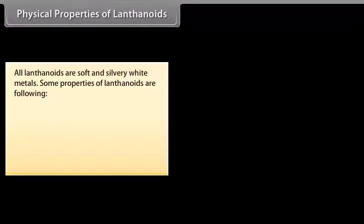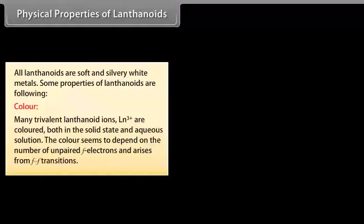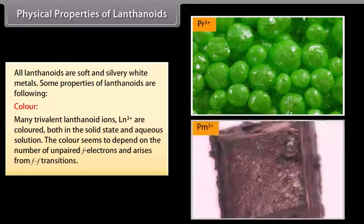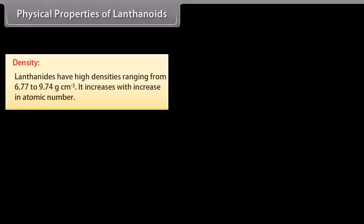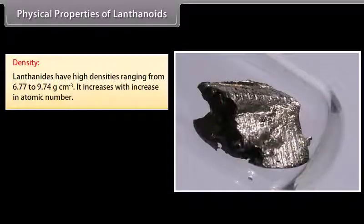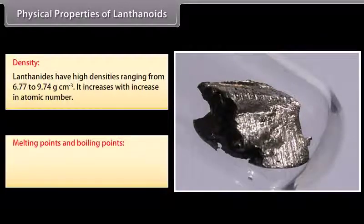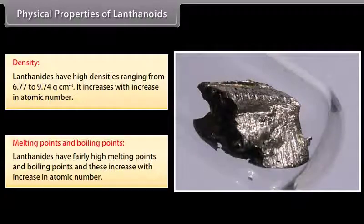All lanthanoids are soft and silvery white metals. Many trivalent lanthanoid ions (Ln³⁺) are colored both in the solid state and aqueous solution; the color depends on the number of unpaired F electrons and arises from f–f transitions. For example, Pr³⁺ is green and Pm³⁺ is pink. Lanthanides have high densities ranging from 6.77 to 9.74 g/cm³, increasing with atomic number. They also have fairly high melting points and boiling points that increase with atomic number, because attraction between atoms increases as size decreases.